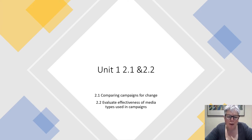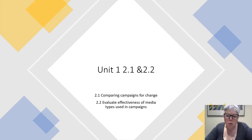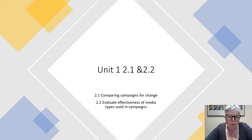I'm going to start with 2.1 and 2.2. 2.1 I think is the most tricky of all the write-ups because it's a really difficult thing to compare different campaigns and make some sort of judgement. 2.2 is much more straightforward, but both of these are about your skills of analysis and evaluation. You don't want to be describing too much — you want to be talking through the consequences, the impact, the strengths and weaknesses, similarities and differences, because that's what's going to get you into top band.